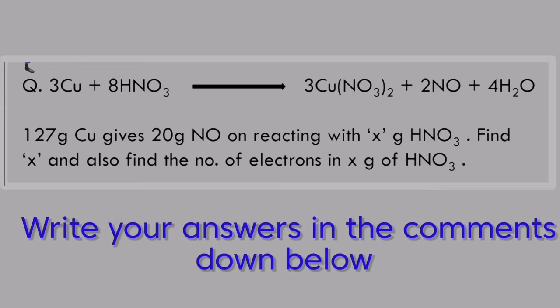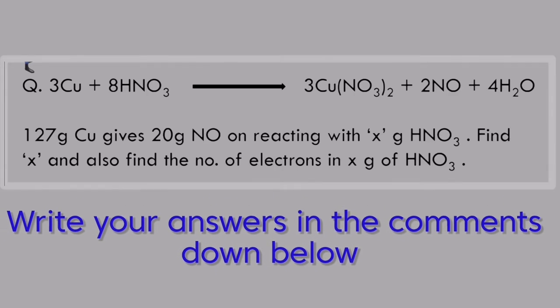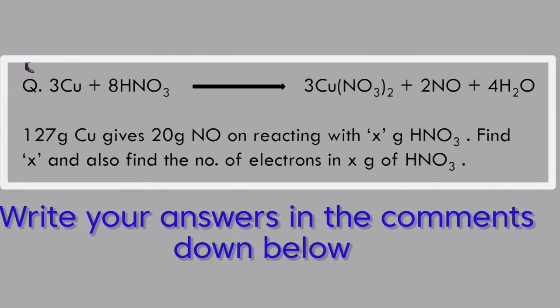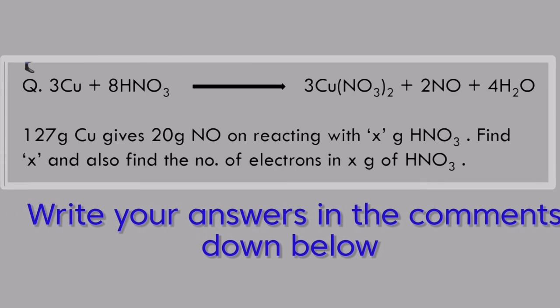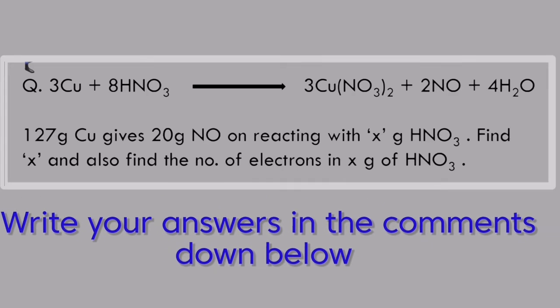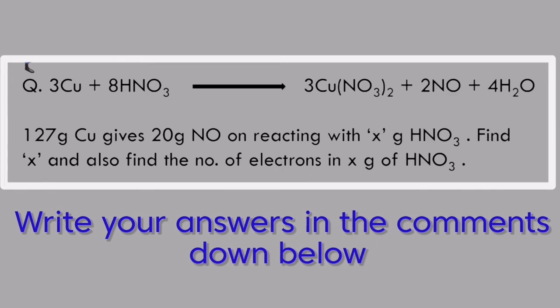127 grams Cu gives 20 grams NO on reacting with x grams HNO₃. Find x and also find the number of electrons in x grams of HNO₃. Tricky or out of the box it might seem, but it's really very fundamental and easy.